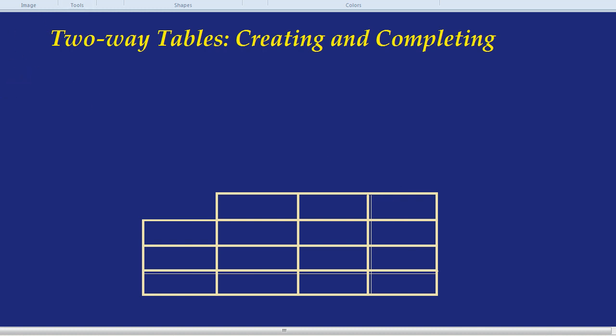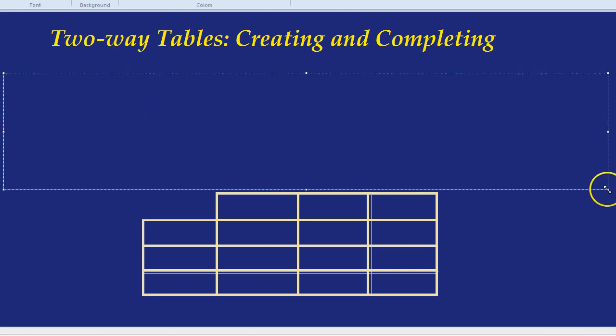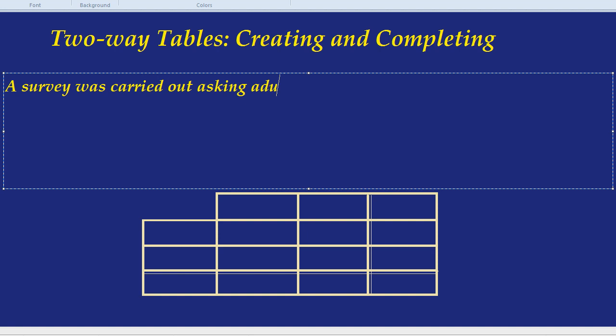You might already be a bit lost, but we're going to do an example just to show you what I'm talking about. In this example, there's going to be a survey. This survey did not happen in real life. I'm completely making it up. A survey was carried out asking adults and children whether or not they owned a tablet.